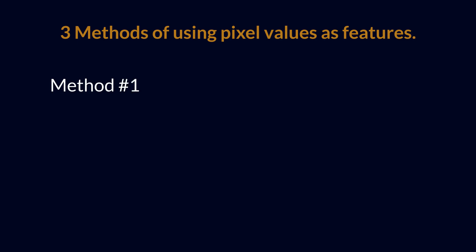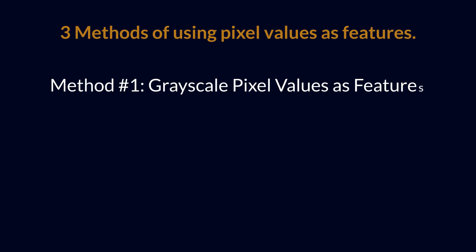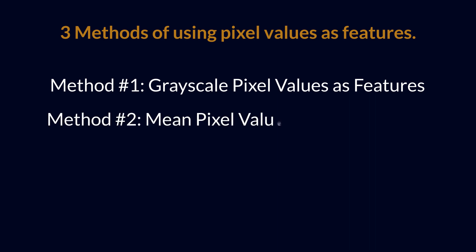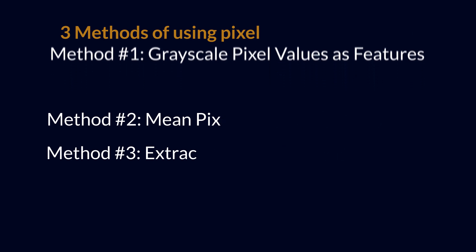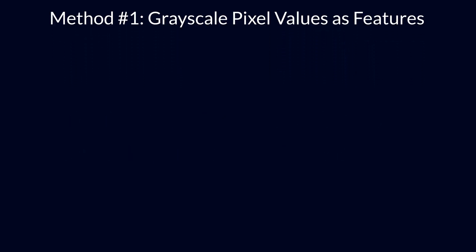The first method is grayscale pixel values as features. The second one is the mean pixel value of channels. The third one is extracting edge features. First, let us see how grayscale pixel values works.